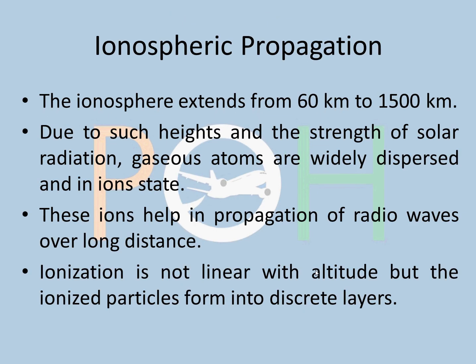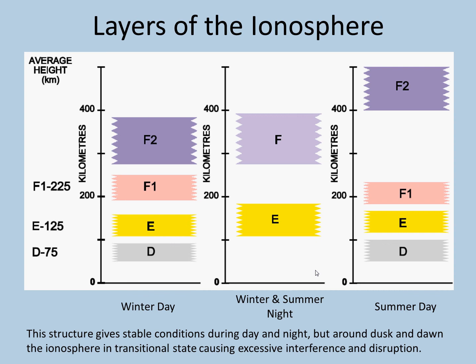Now we'll talk about ionospheric propagation. Just to give you a quick recap: the ionosphere extends from 60 km to about 1500 km. Due to such heights and the strength of solar radiation, gaseous atoms are widely dispersed and in ion state. These ions help in propagation of radio waves over long distance because they have reflection properties. Ionization is not linear with altitude but actually varies and forms discrete layers.